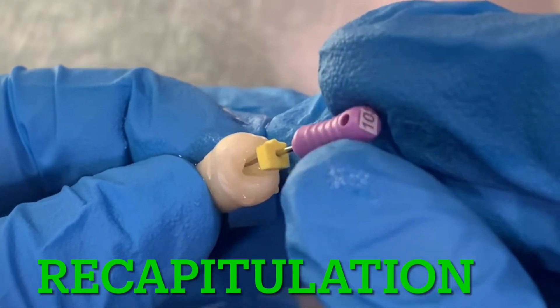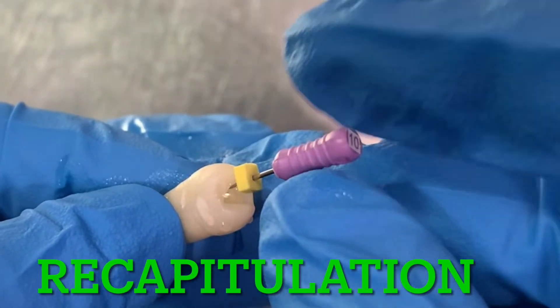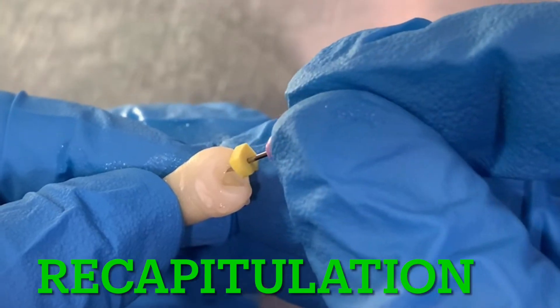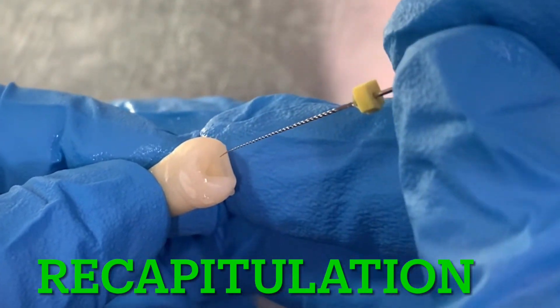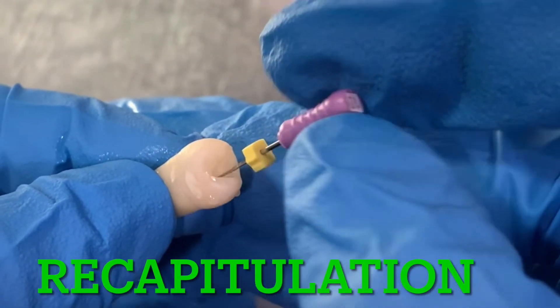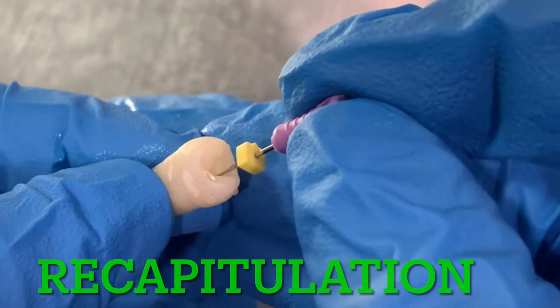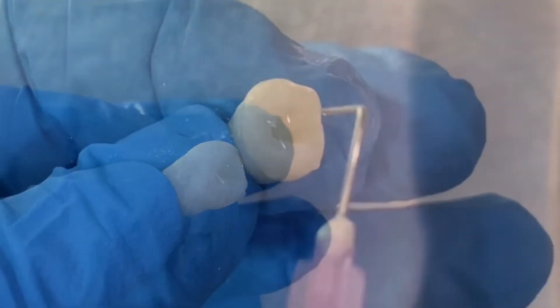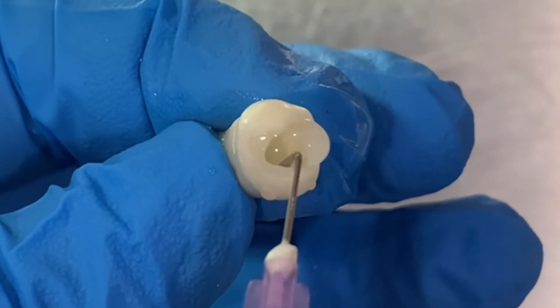After irrigation, recapitulation is done with a 10 number file to break the debris and to move in the solution. This is followed by re-irrigation.